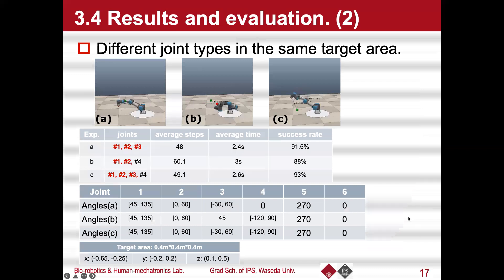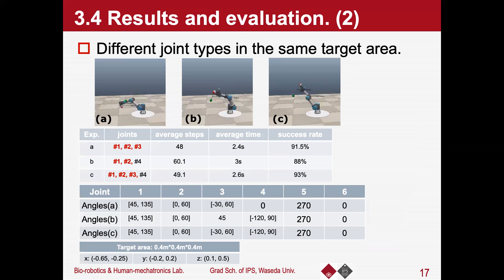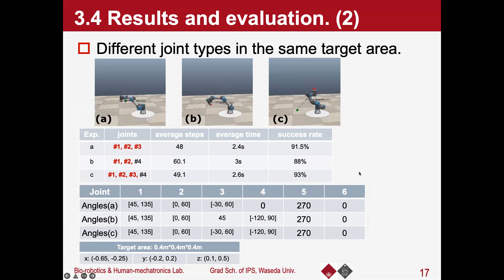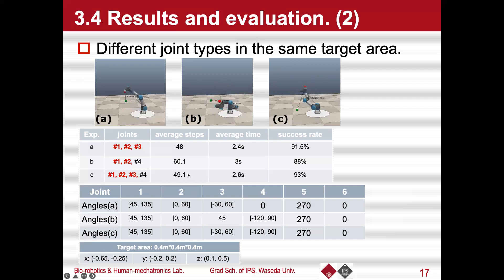In order to find out the influence of joint numbers and types on the training process, we designed three groups of experiments with different numbers and types of joints. During training, the robotic arm controlled the chosen joints to reach random positions. The target area is limited and joint angle limitations are shown in the table. From this experiment, experiment C has the best performance, and experiment A is better than experiment B, reaching more random positions in a shorter time.